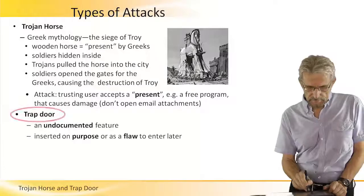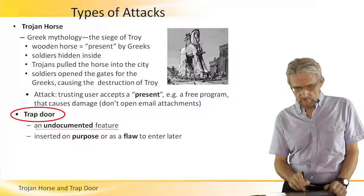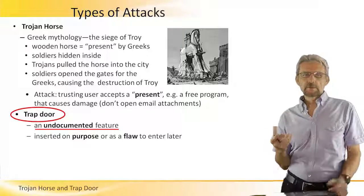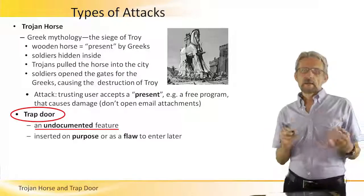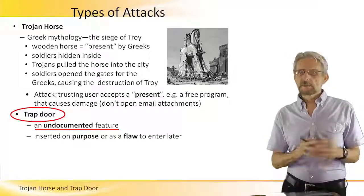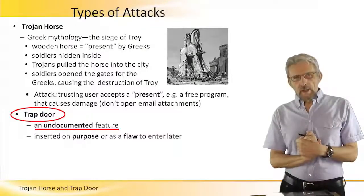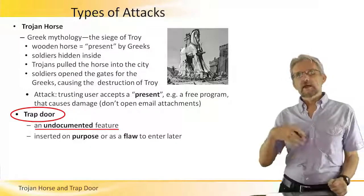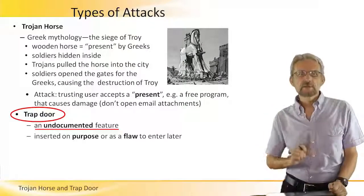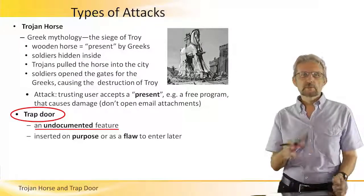The next attack is called a trapdoor. What happens here is that this is an undocumented feature of some kind of system. A programmer works on a system and implements a feature inside the program which is not documented, so nobody knows about it except the person themselves. That means even after the programmer leaves or is let go from the company, they would still have certain privileges and certain access to this program.